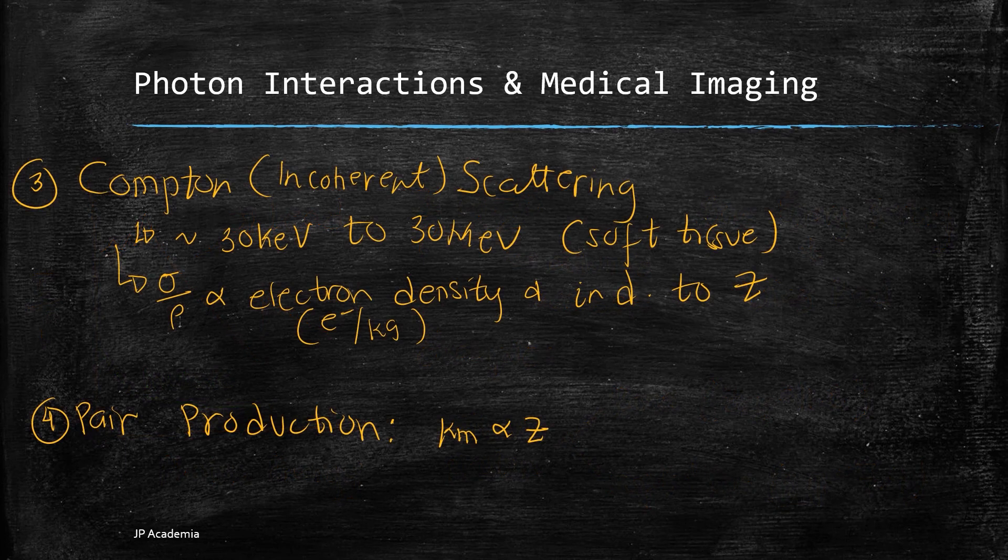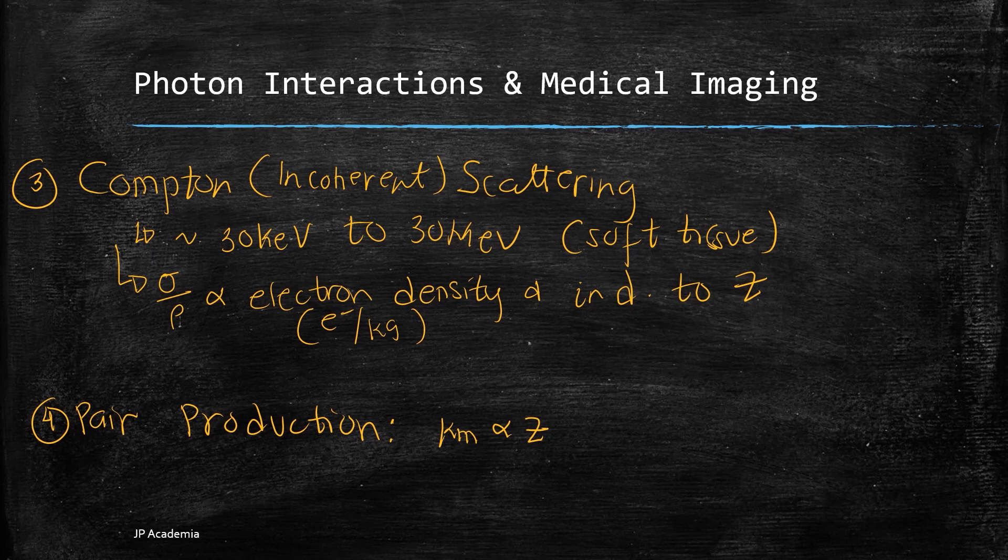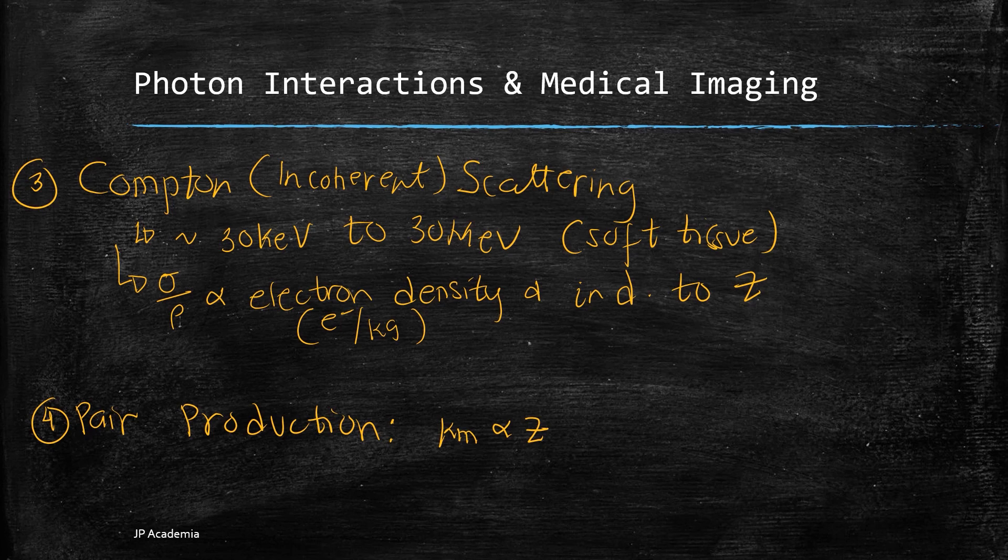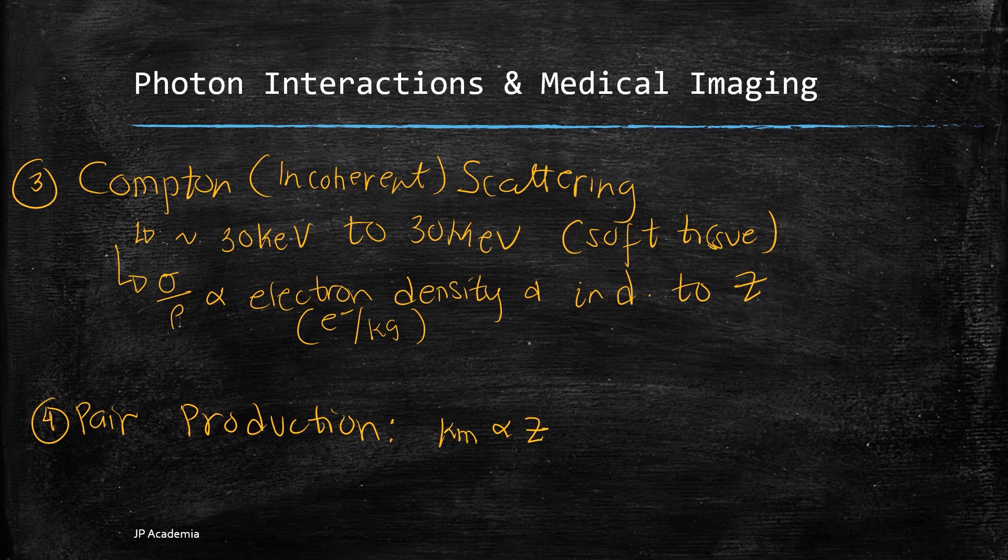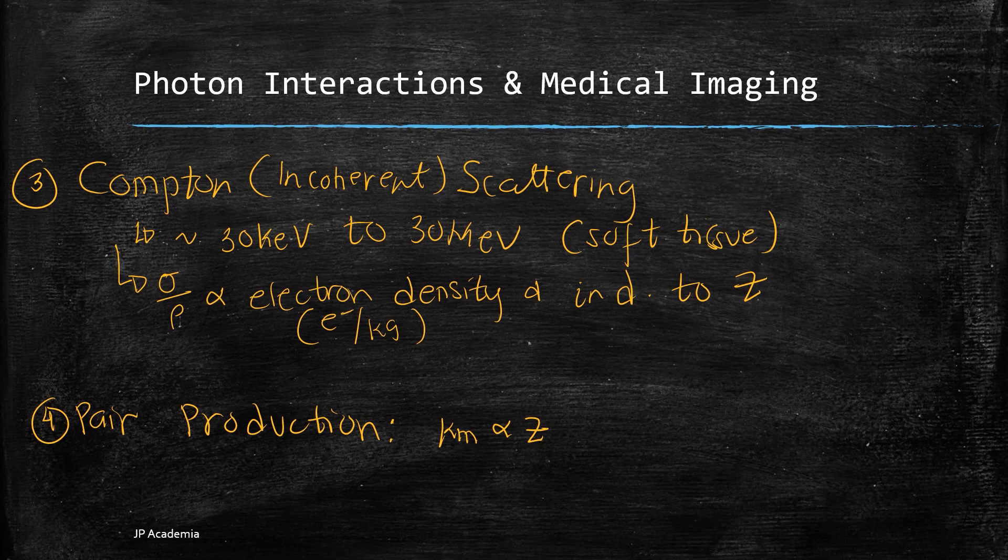Photon energies of about 30 kilo electron volts to 30 mega electron volts commonly interacts in soft tissue through Compton scattering, wherein part of the incident photon energy is transferred to a free electron. When we have high energy photon, example, from a linear accelerator, most of the energy is transferred to Compton electron than the scattered photon. Compton mass attenuation coefficient is actually directly related to the electron density of the medium and almost independent to the atomic number Z. Therefore, more free electrons, there will be more Compton scattering events.